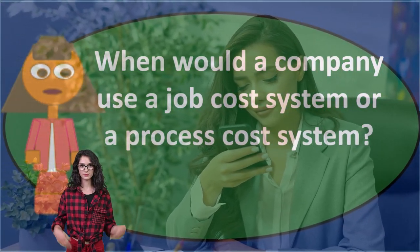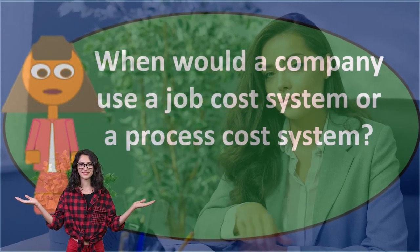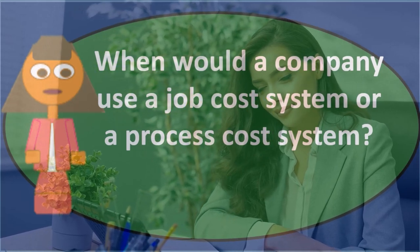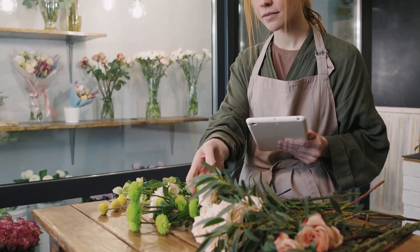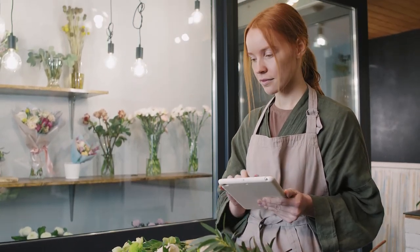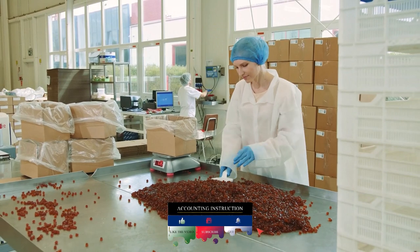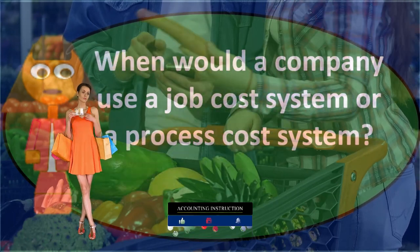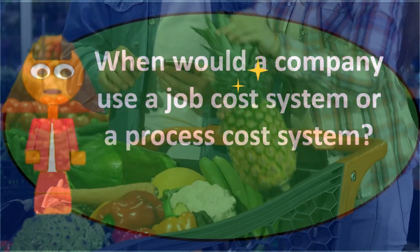You can think about the differences in types of processes to understand when you would use one system versus the other. The job cost system tracks each individual item with a separate job as it goes through the production process. The process cost system can't track each piece of inventory separately because items are all the same and mass-produced. Instead, it tracks inventory as it moves from raw materials to work in process to finished goods — not by individual units, but by the process each stage represents.